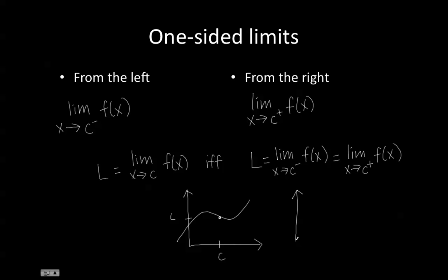An example of a function that does not have a limit as x approaches c looks something like this, where you can see that the limit as x approaches c from the negative side approaches one value that does not equal the limit as x approaches c from the positive side.